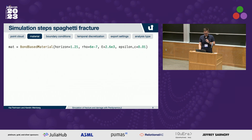In the next step, we have to define material properties. Here we use a simple point-based material. The first parameter we have to define is the horizon, which is this important parameter of peridynamics. Then we have density, Young's modulus, and epsilon_c, which is the critical bond stretch that you need to define for the damage. If you run this in the REPL, you have a nice output and you can see additional parameters of the simulation are then calculated within this type.